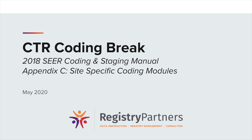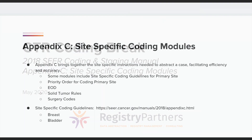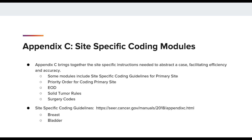Hello and welcome to the May 2020 Registry Partners Coding Break. This month, the presentation will focus on the 2018 SEER Coding and Staging Manual, Appendix C, containing the site-specific coding modules and the coding guidelines that assist CTRs in coding the subsites. Appendix C brings together the site-specific instructions needed to abstract a case, which facilitates efficiency and accuracy. Some of the modules include site-specific coding guidelines for coding the primary site, priority order, extent of disease, solid tumor rules, and surgery codes. This presentation will review in detail coding the subsite and the priority order.